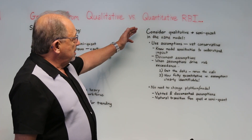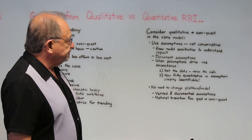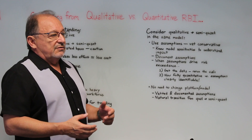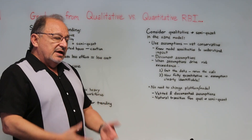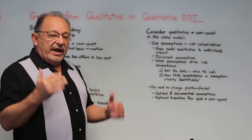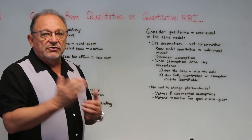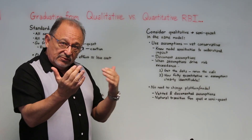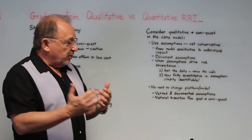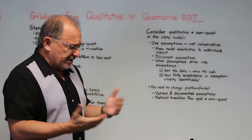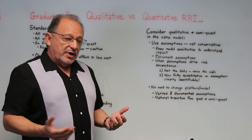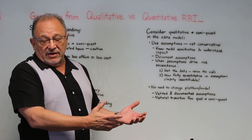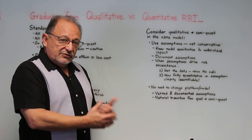Consider qualitative and semi-quantitative within the same model. A lot of people believed early on with RBI that if you've got a plant with 5,000 or 10,000 various pieces of equipment and piping circuits, it would be better to do an initial qualitative screen and then do semi-quantitative on items above a certain risk level. The hazard is if those two risk platforms are not calibrated against one another. We saw this in the early API RBI user group project around 1997-98, where a refinery operator gave us data for about 200 pieces of equipment and we ran both a fully qualitative and a fully semi-quantitative study on them.